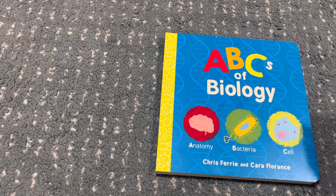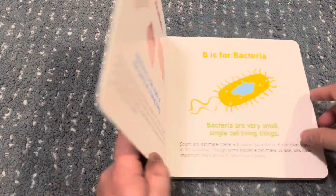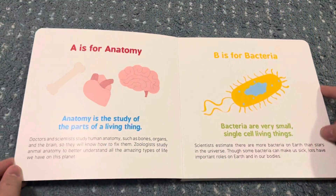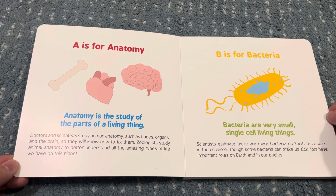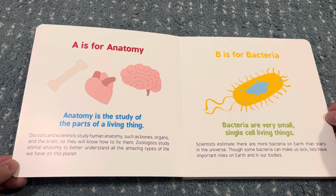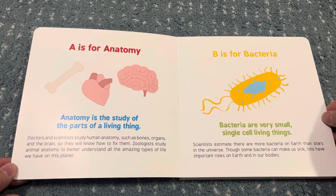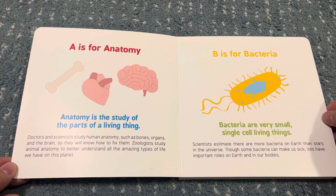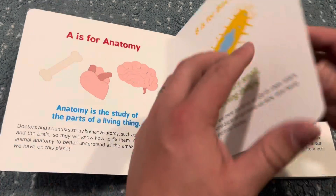ABCs of biology. A is for anatomy. Anatomy is the study of the parts of a living thing. B is for bacteria. Bacteria are very small, single-cell living things.